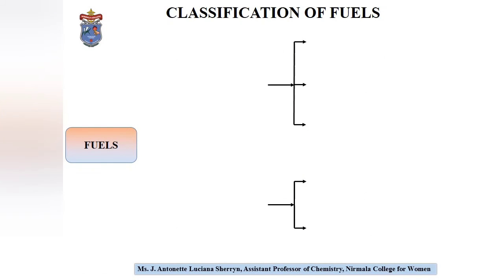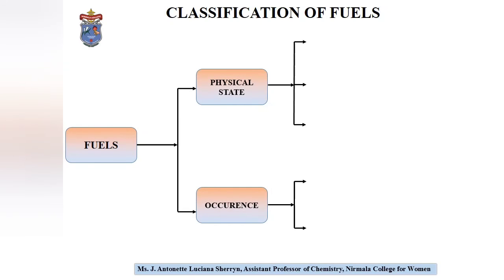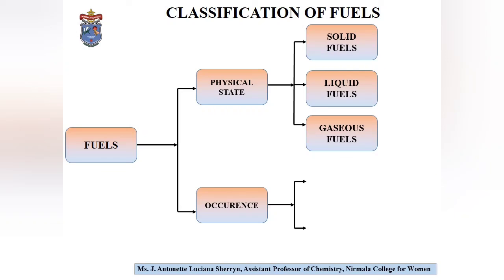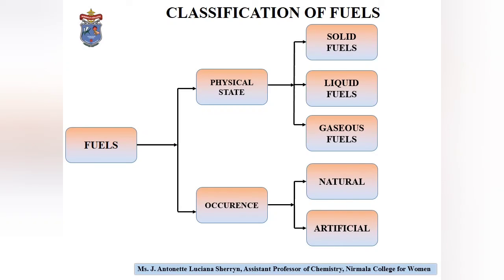Moving forward, let us get into the classification of fuels. Fuels are classified into two major categories: one is based on the physical state, and the other is based on the occurrence. Fuels appear in three physical states: solid fuels, liquid fuels, and gaseous fuels. On the basis of occurrence, fuels are either naturally occurring or artificial, i.e. man-made.